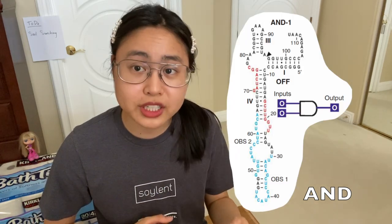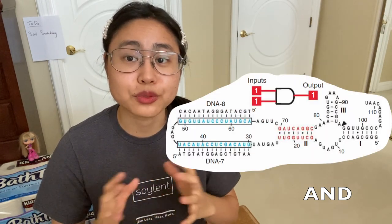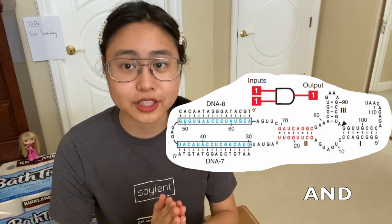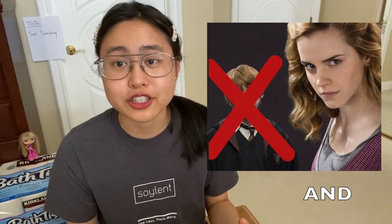This brings me to the third logic gate: the AND gate. Imagine you're about to go find a horcrux and you need two sidekicks — Ron and Hermione. The riboswitch now has two blue regions because it needs two DNA sequences, each binding to one of the respective blue regions, for the RNA structure to rearrange and the red regions to align. One DNA sequence isn't good enough, and just the other also isn't good enough. You need both sidekicks present — and that's why this is called an AND gate.